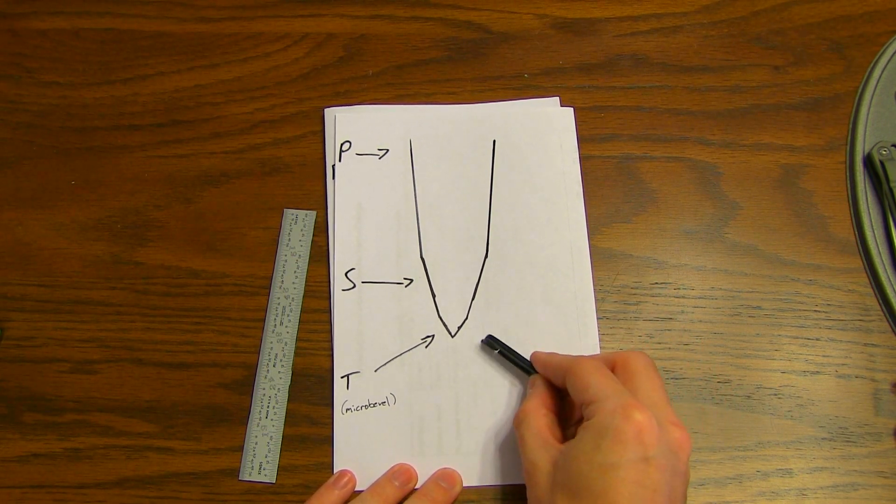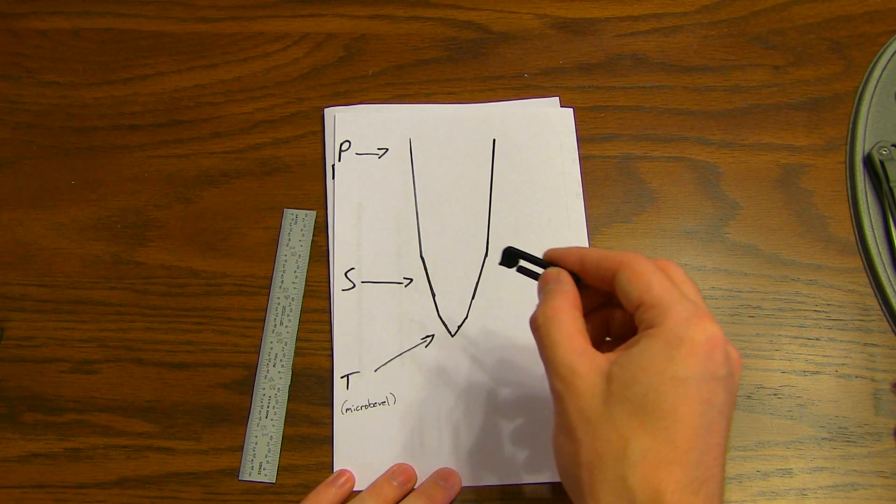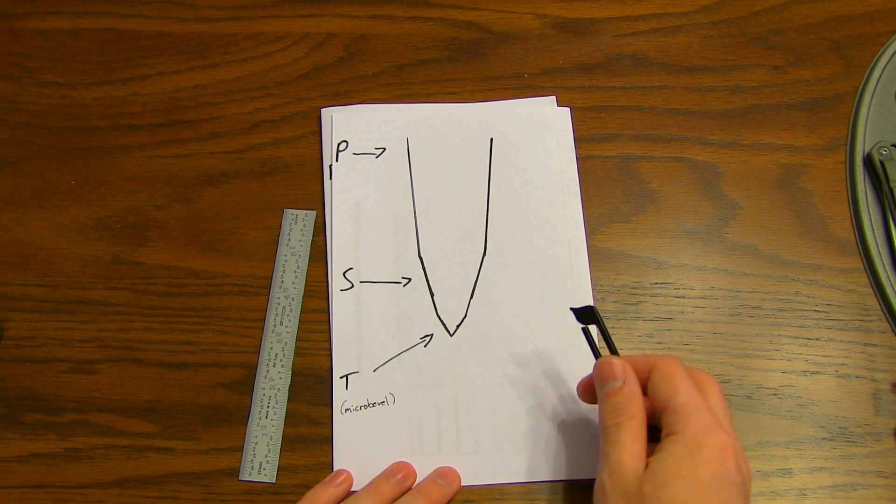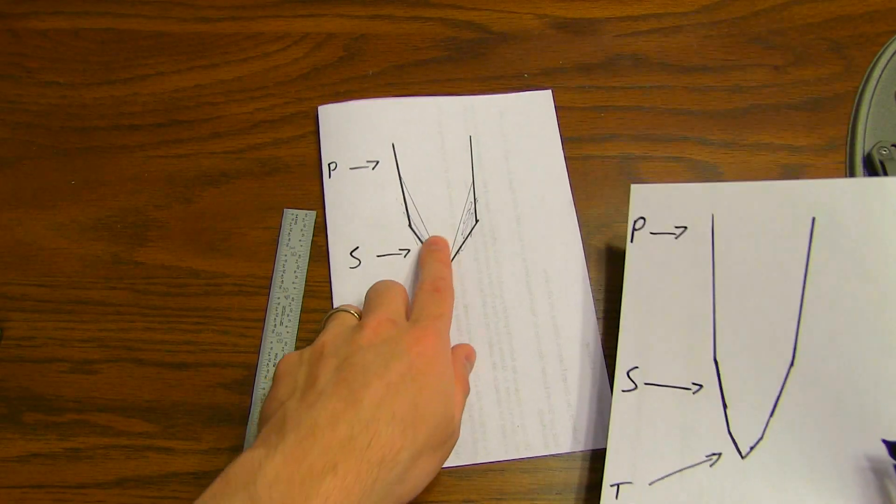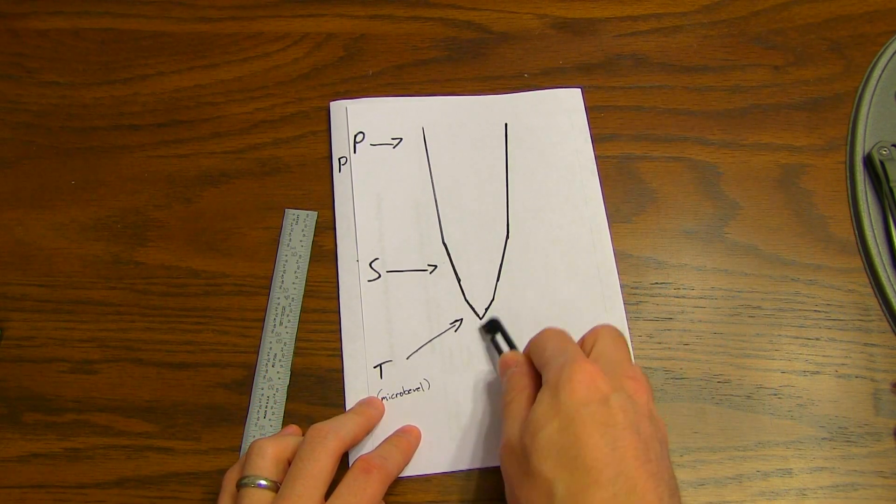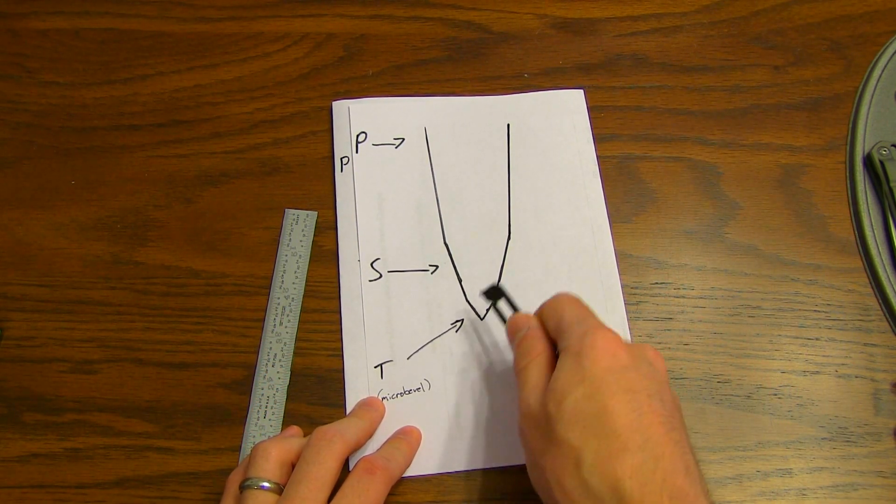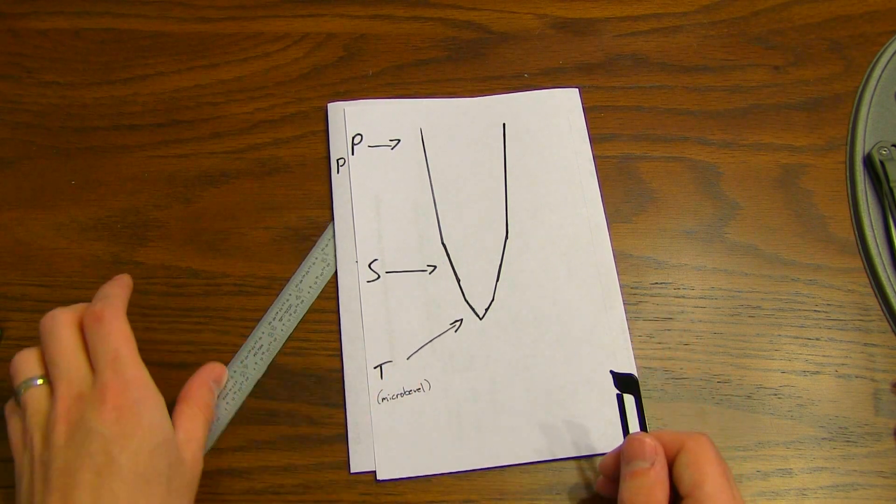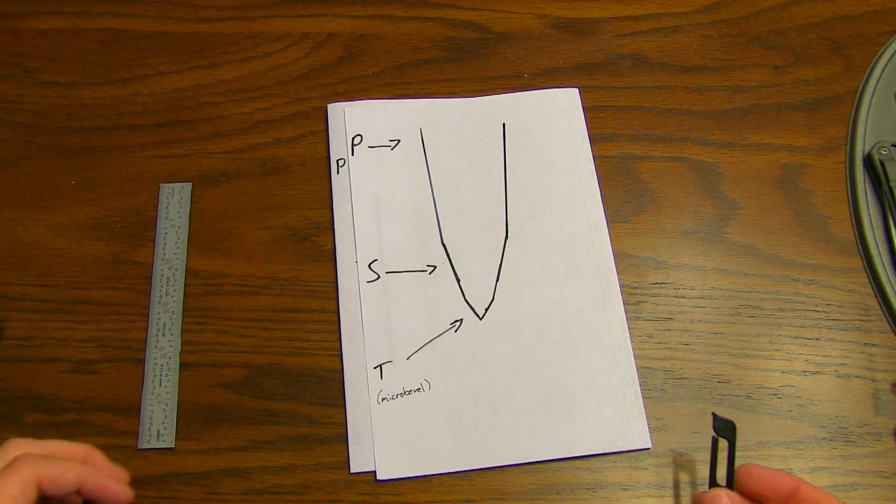You still get a lot of cutting performance with this, but you also get the strength. Granted, side by side, this thinned out edge will cut better, but you're not going to notice much of a difference in day-to-day tasks with a micro bevel. But you will notice a big difference in edge stability with a micro bevel.